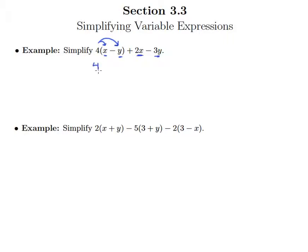We multiply 4 by x and 4 by y. In the simplification problems we've done so far, we've reordered things and set like terms next to each other, but if it's a fairly simple case, you don't need to do that. I can see that 4x and 2x are like terms, so 4x plus 2x is 6x.